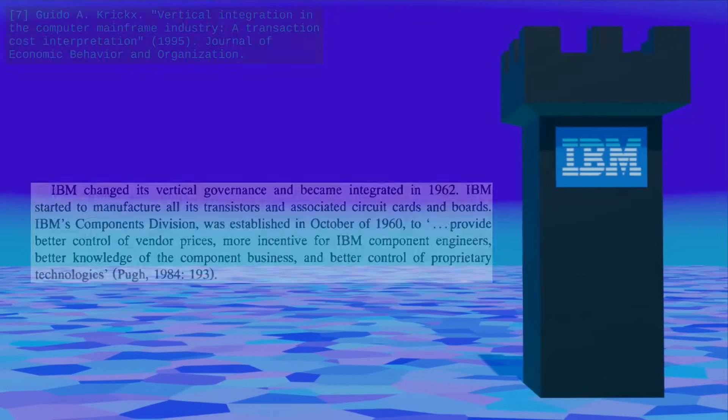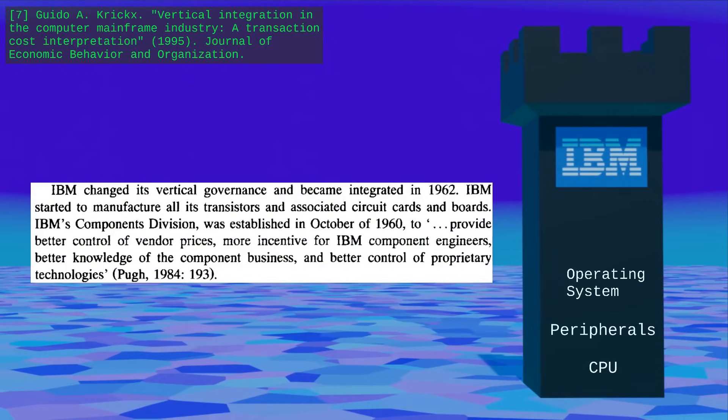Computers built with that kind of vertical integration were expensive, but IBM liked it because it completely controlled the platform. Consumers were stuck in a vendor lock-in and had to rely on IBM for support. Apple still has a similar strategy — it makes the hardware and software of its devices, and that gives it a lot of power.